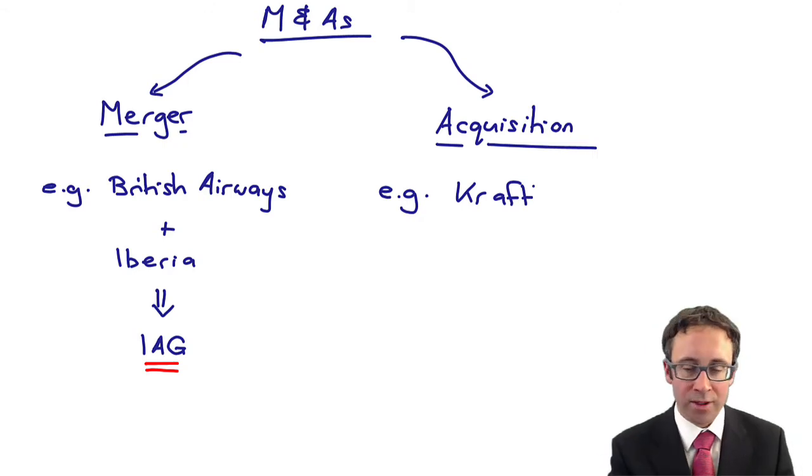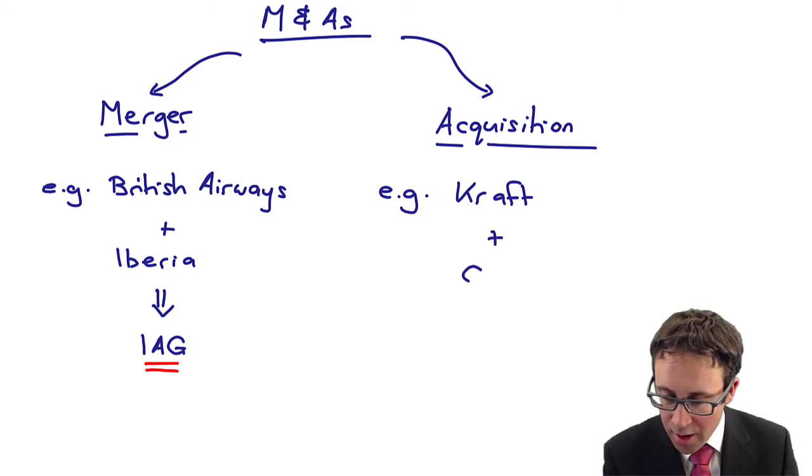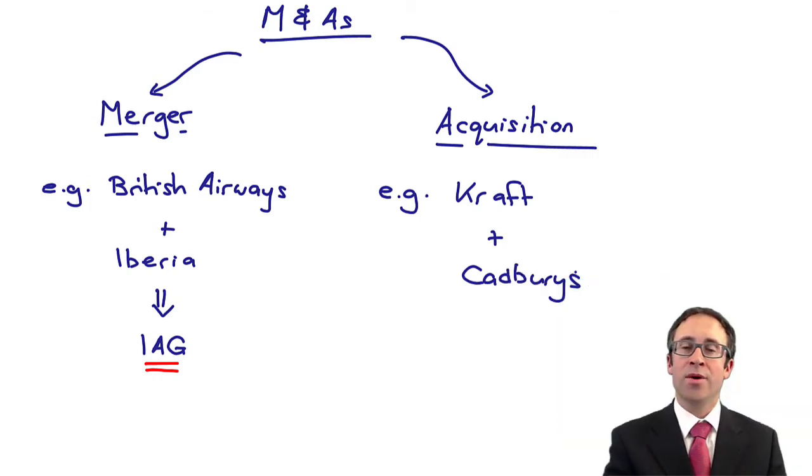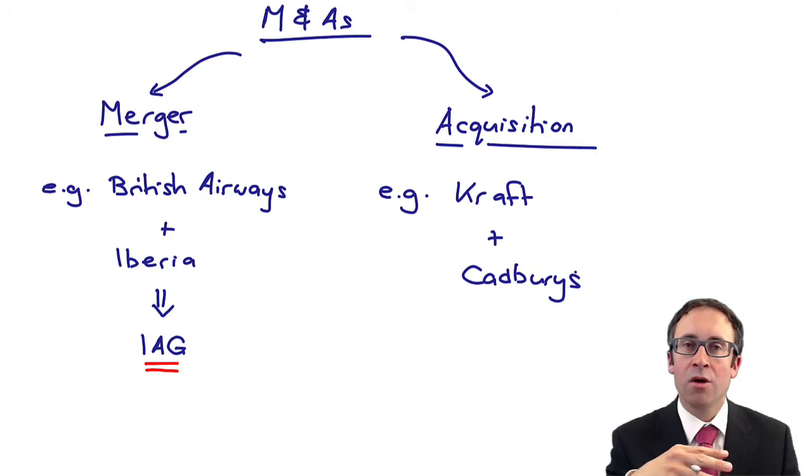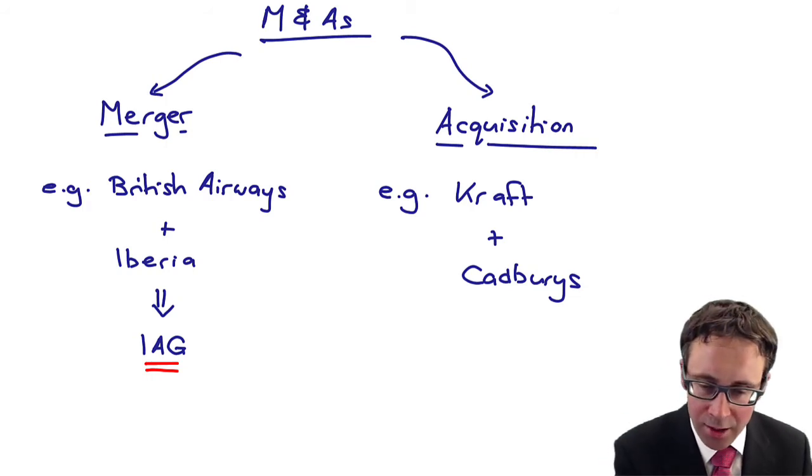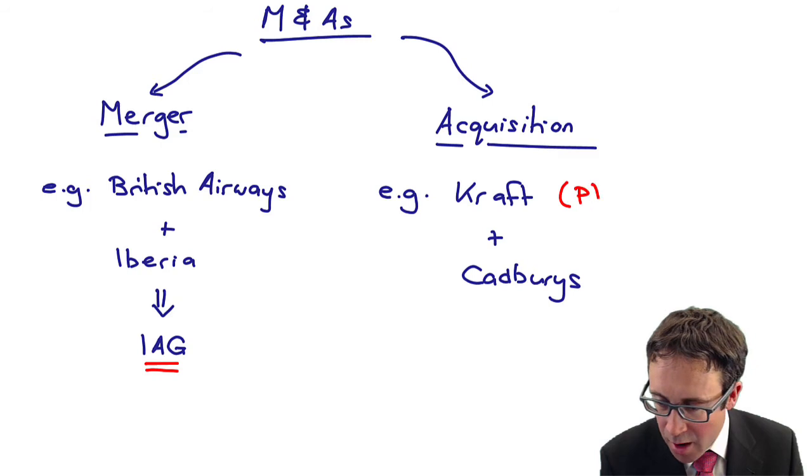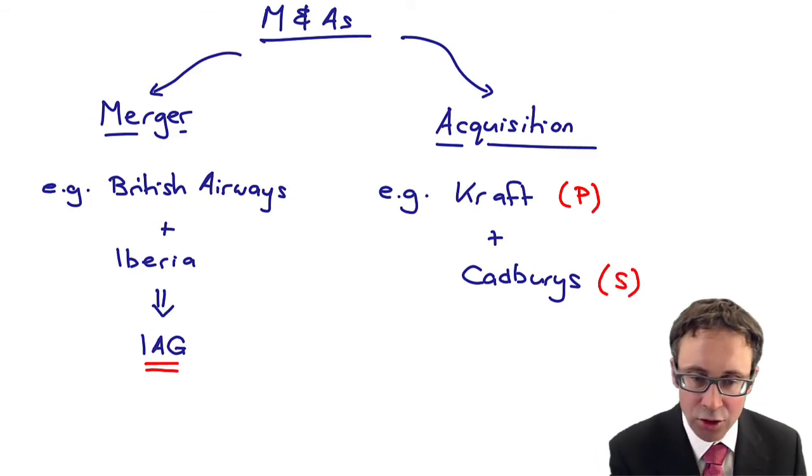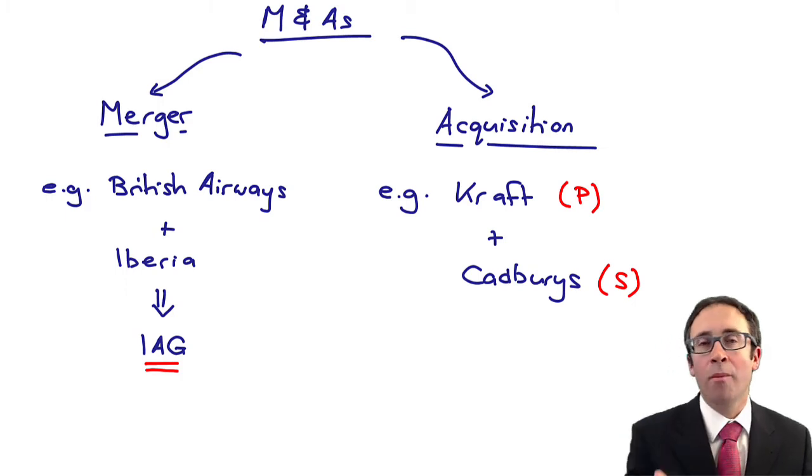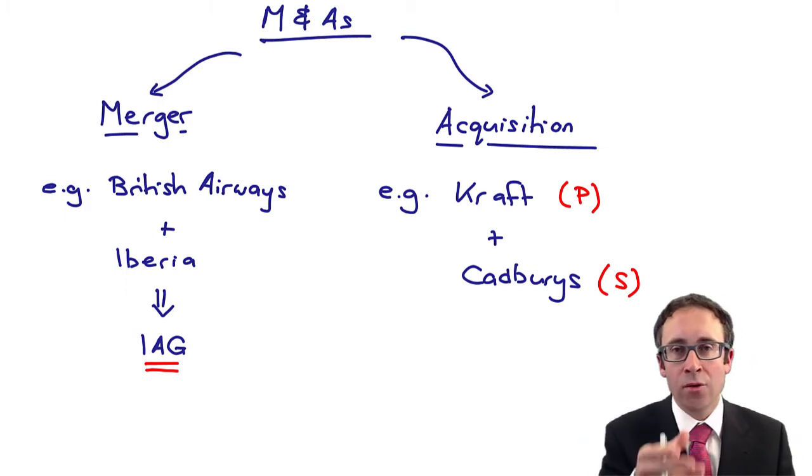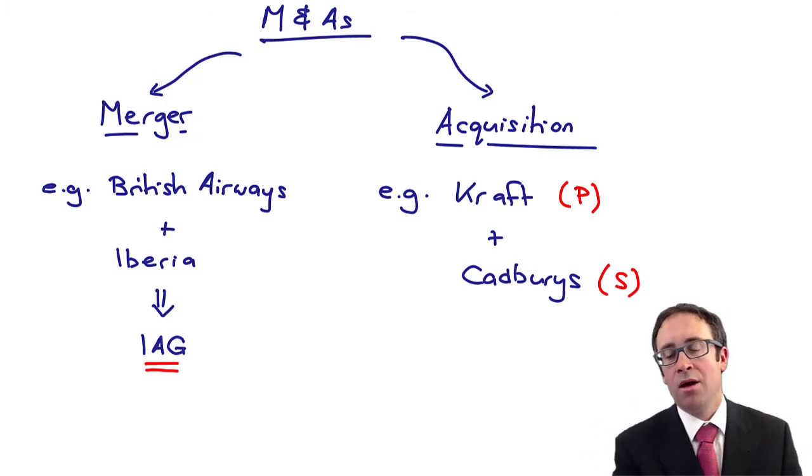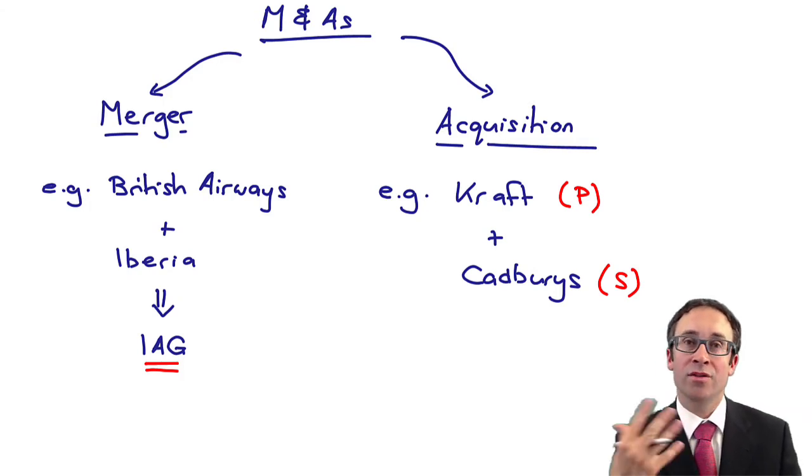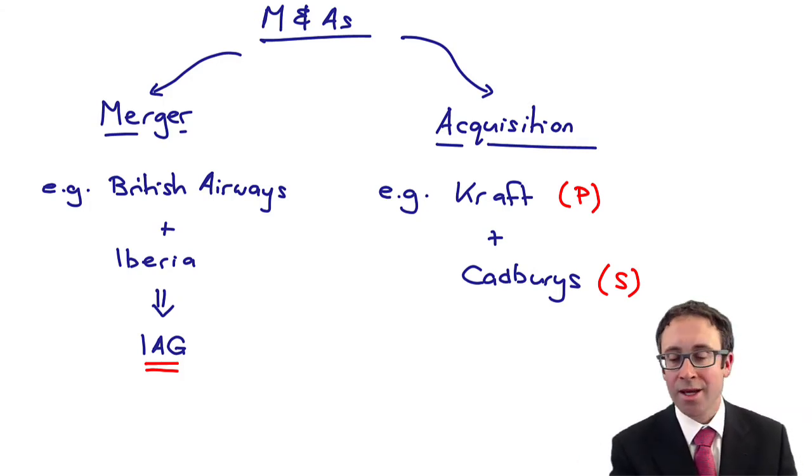Examples that you've got there - let's say Kraft, the US food business, went through and bought Cadbury's in the UK. Kraft gained control of Cadbury's, so Kraft is the parent company, Cadbury's is the subsidiary company. Cadbury's still operates as its own legal entity in the UK, it's just governed and run by the Kraft business and the Kraft shareholders based in America.